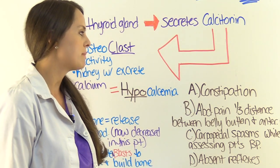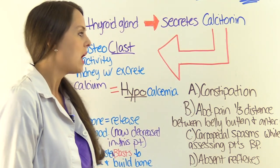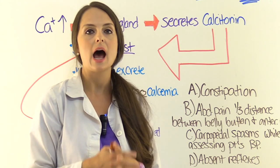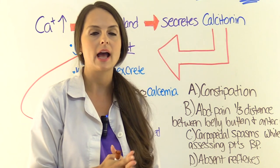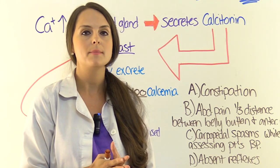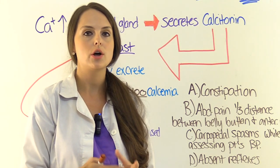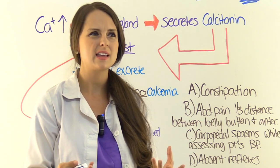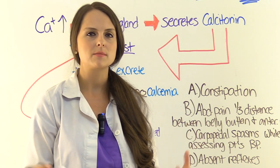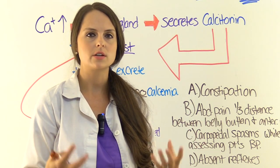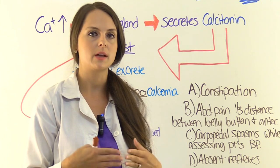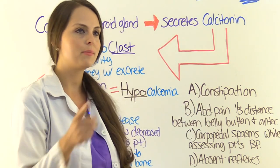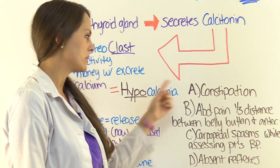Answer A — constipation. Constipation is actually seen in hypercalcemia, because it slows down the GI tract. The stool sits in there, becomes hard, it's difficult to pass, and the patient becomes constipated. That's the other side — hypercalcemia is where you would see constipation, not hypocalcemia.